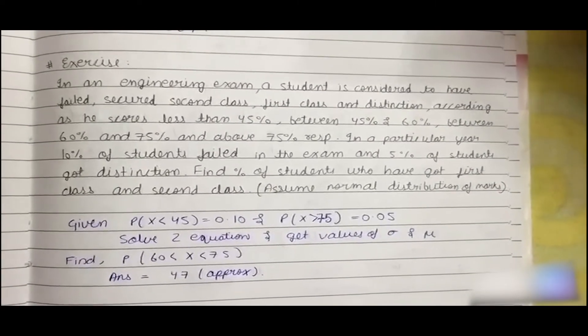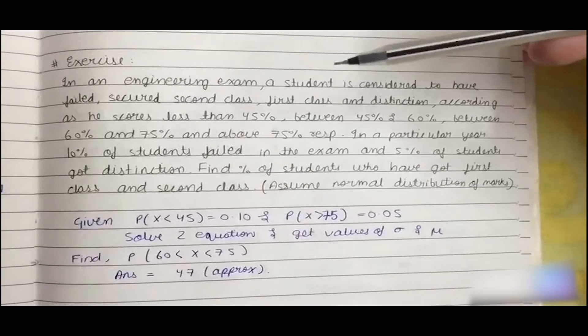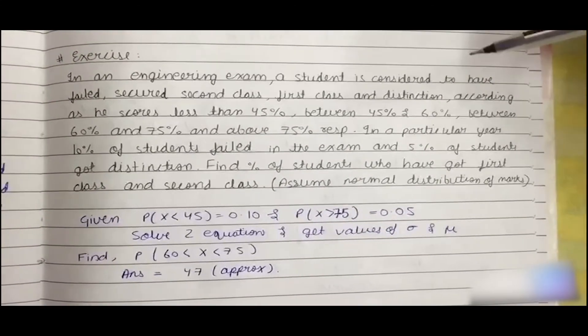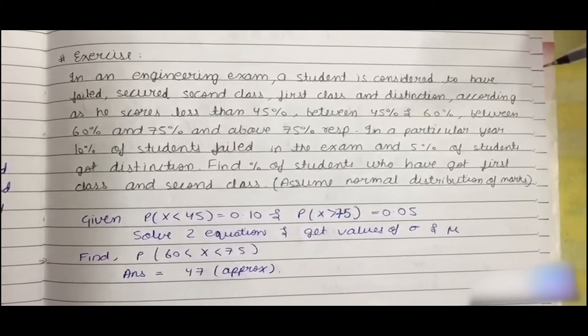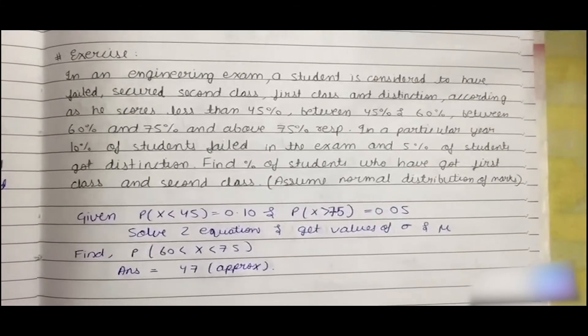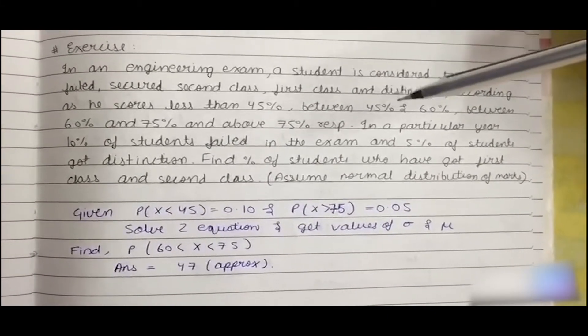In this question it has been given that in an engineering exam a student is considered to have failed, secured second class, first class, and distinction according as they score between 45 percent, 45 to 60, 60 to 75, and above 75.